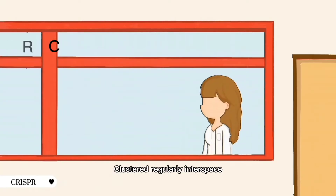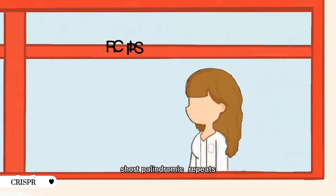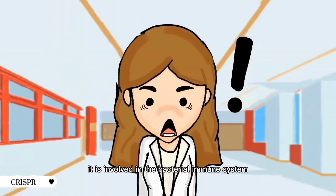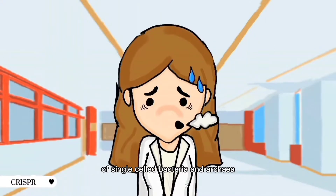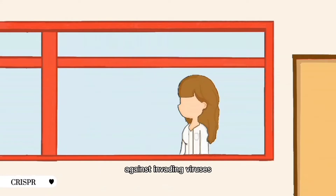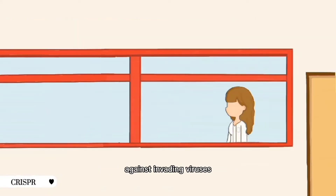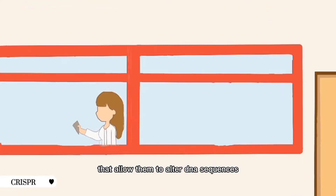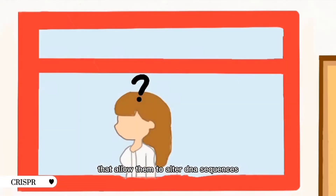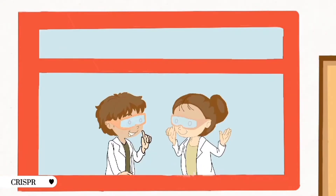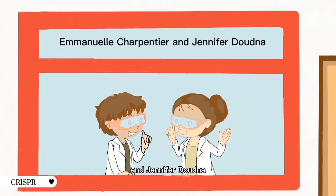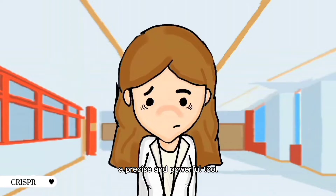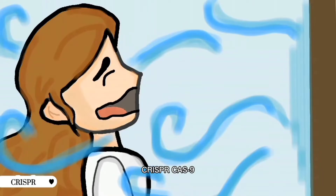Clustered Regularly Interspaced Short Palindromic Repeats, or most commonly known as CRISPR, is involved in the bacterial immune system of single-celled bacteria and archaea against invading viruses. It can become a powerful tool for editing genomes, allowing them to alter DNA sequences and modify their function. Thank you, Emmanuel Charpentier and Jennifer Doudna — they were able to discover and develop a precise and powerful tool: CRISPR-Cas9.